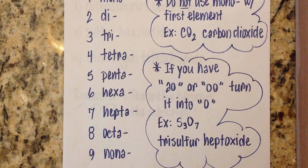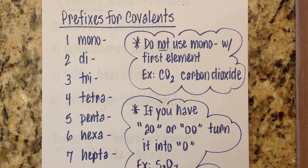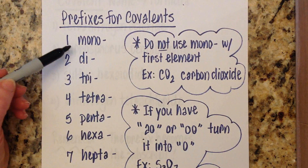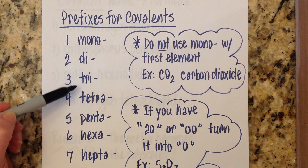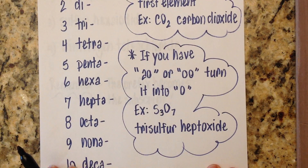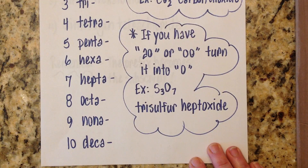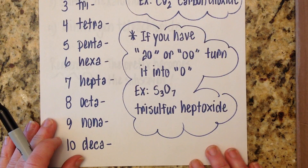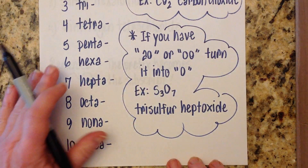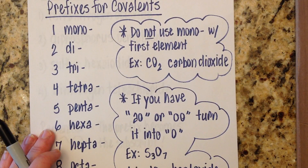Here is a list of your covalent prefixes: mono, di, tri, tetra, penta, hexa, hepta, octa, nona, deca. I doubt that's new information for anyone, but you have them there if you need them. A couple of things to keep in mind before we start.